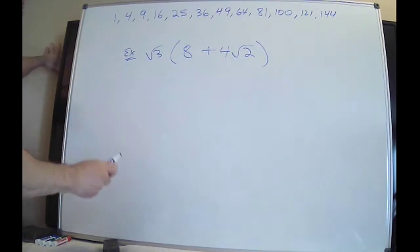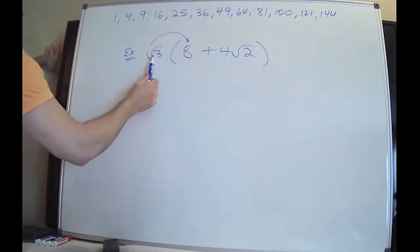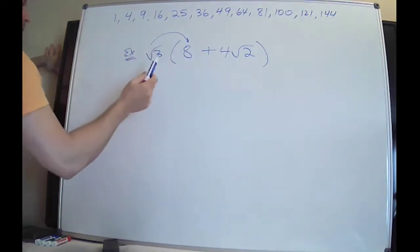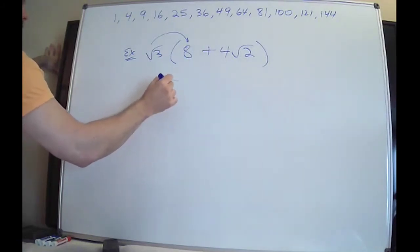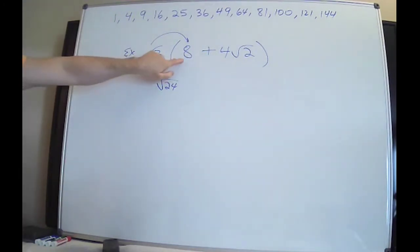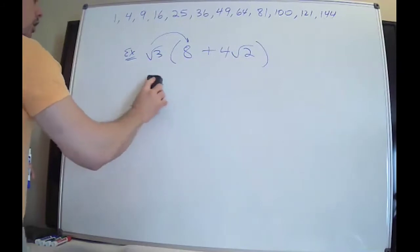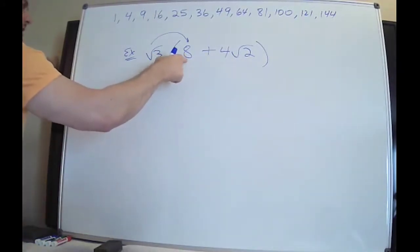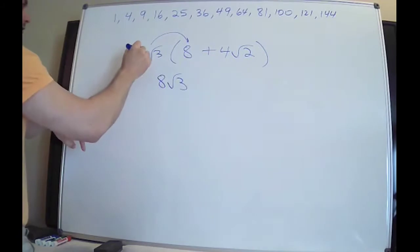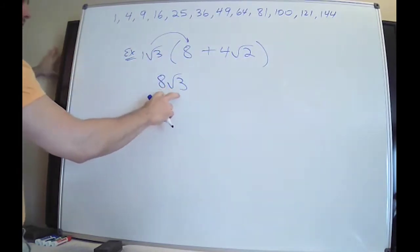Problem number two — multiplying again, distributing this times this and this times this. Here is the mistake people make: they multiply radical three times eight and get radical 24 by putting the eight inside. But remember, the radical is like jail — this number is not in jail. No matter how nicely you ask, he's not going in. You have to leave him on the outside; radical three stays on the inside.